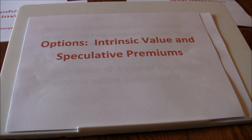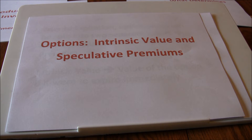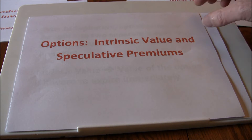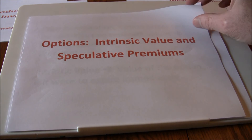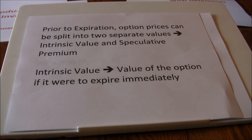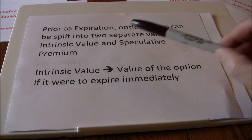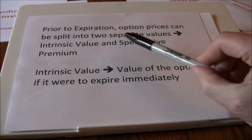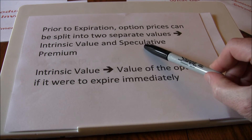In this video, we're going to start looking at what happens prior to expiration. Prior to expiration, we're going to get into intrinsic values and speculative premiums that make up the value of a call option or a put option. So prior to expiration, option prices can be split into two separate values: an intrinsic value and a speculative premium.